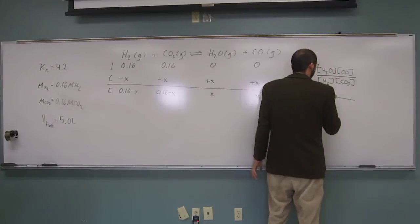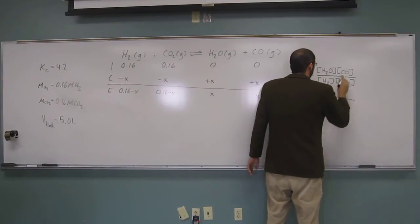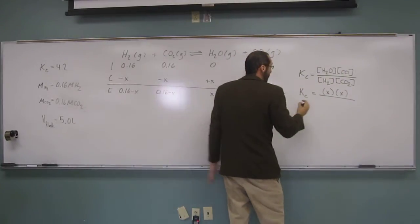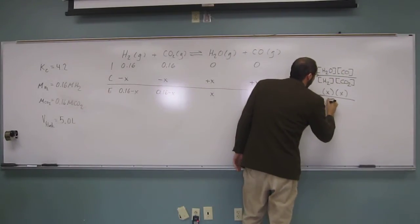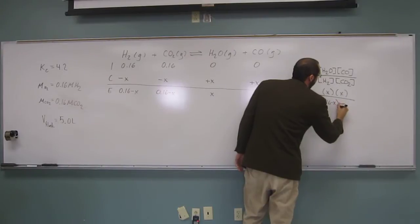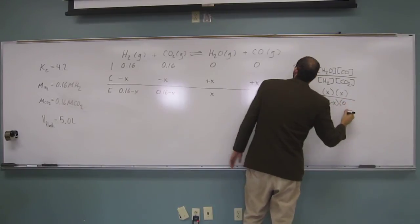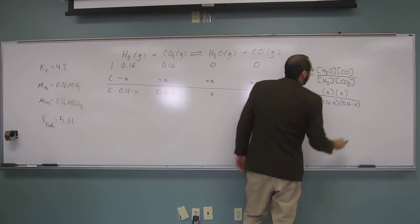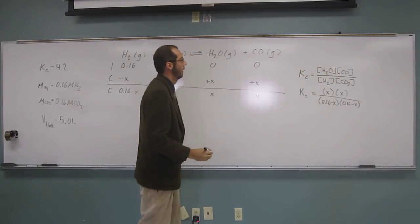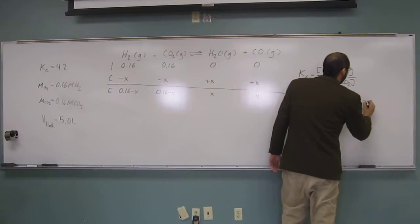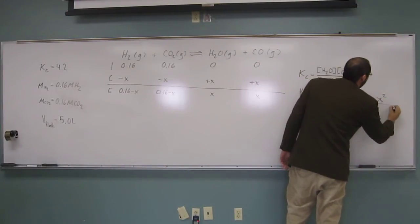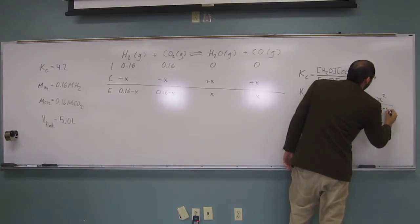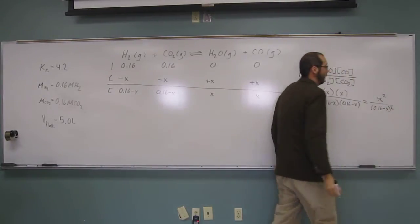So water, x. Carbon monoxide, x. Hydrogen gas, 0.16 minus x. Carbon dioxide, 0.16 minus x. So this, of course, also equals x squared divided by 0.16 minus x squared, like that.